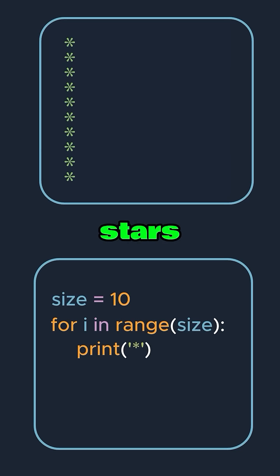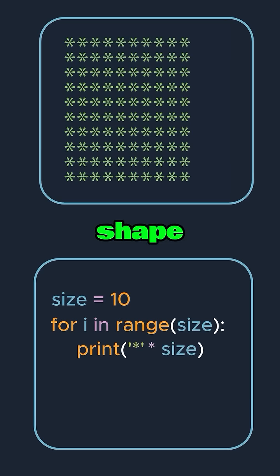Now let's multiply the number of stars in the print statement by the variable size. This creates a square shape as the output, with a total of 100 stars because we print 10 stars 10 times.